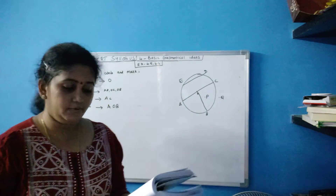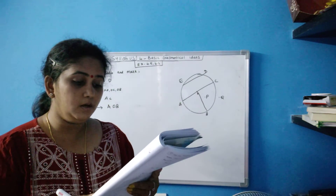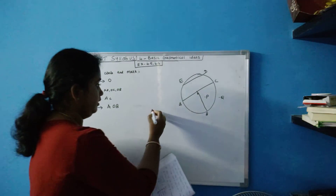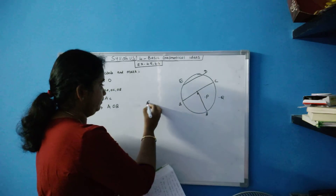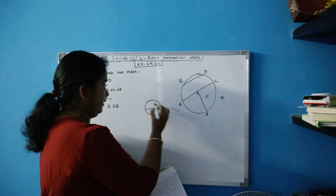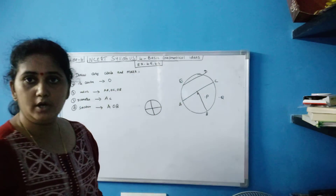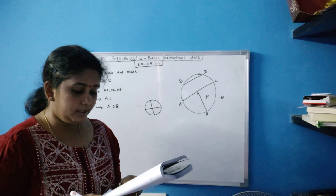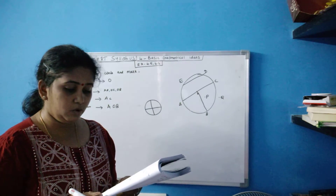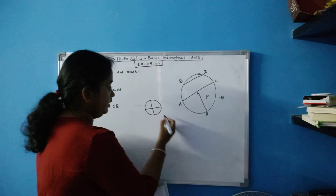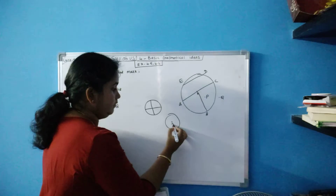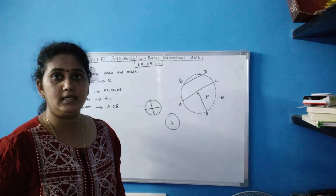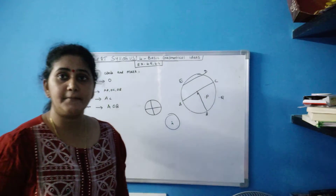Your next question is say true or false. Two diameters of a circle will necessarily intersect — if there is one diameter and another diameter, they will intersect. True. Next: the center of the circle is always in its interior — you take a circle and the center is always in the interior, not exterior. The given statement is true. So with this I am completing chapter 4.